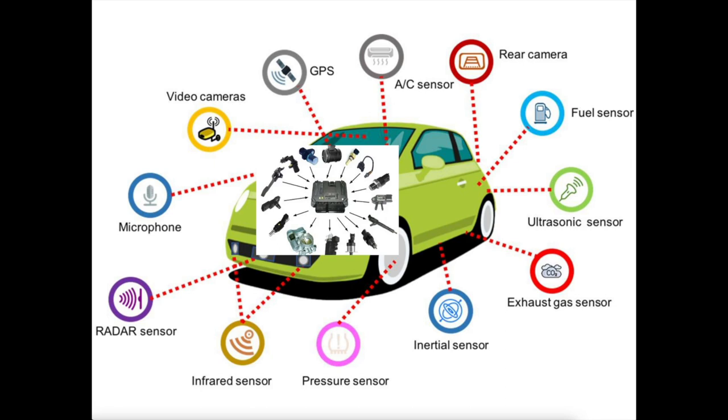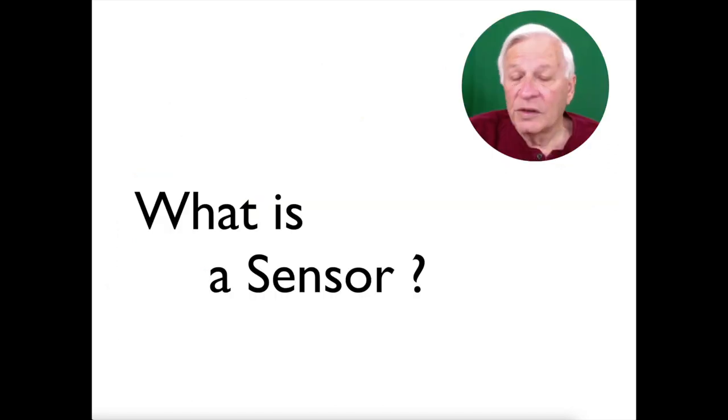Well, the average car can have over 70 different sensors and they are all controlled by their computer which is the PCM. Now, wouldn't it be nice if our cars only had five sensors? Well, what is a sensor?